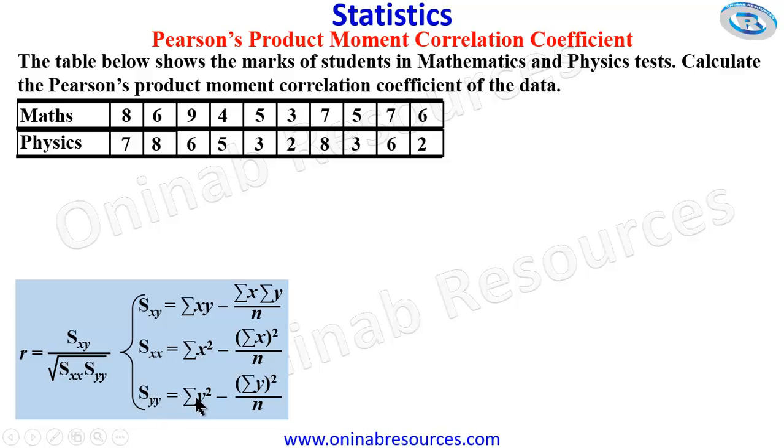S_YY is equal to summation of Y squared minus summation of Y all squared over N. N is the number of observations, like we have 10 observations here.